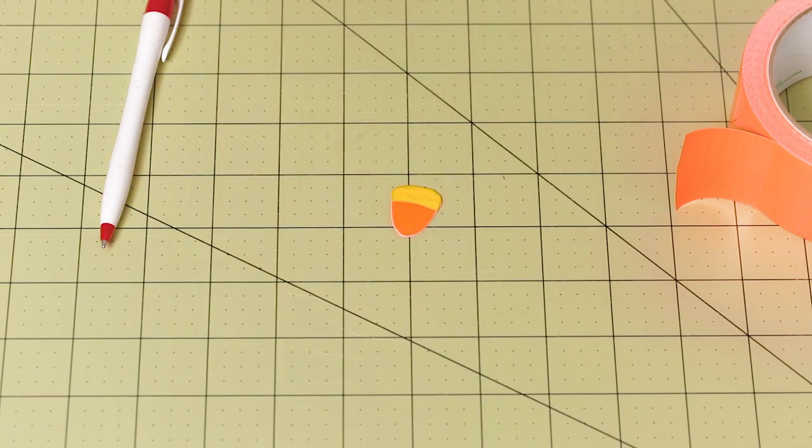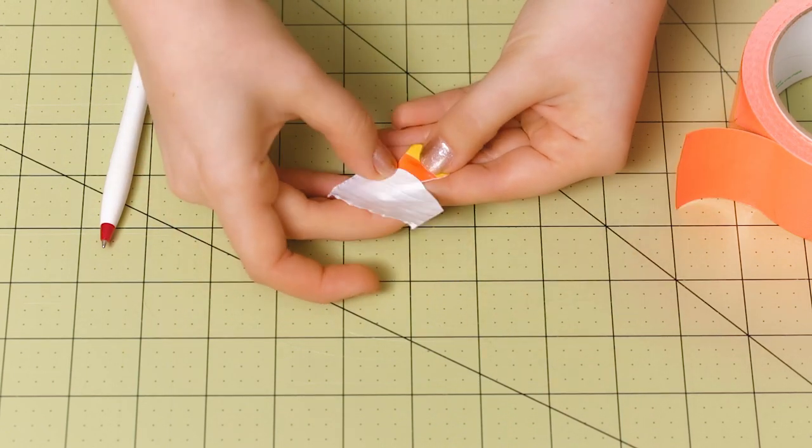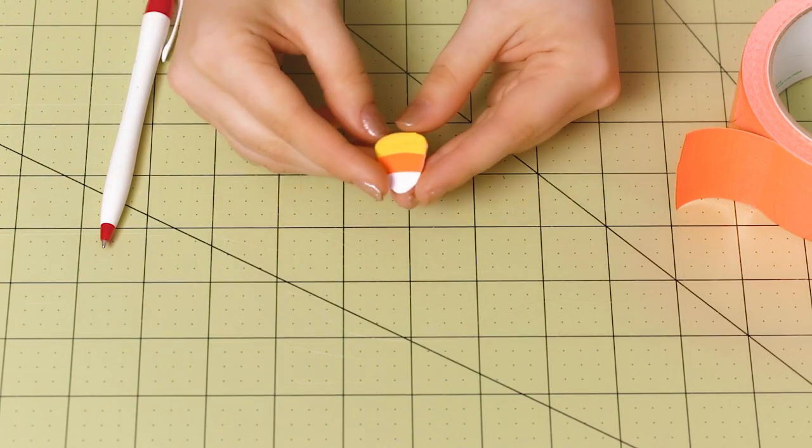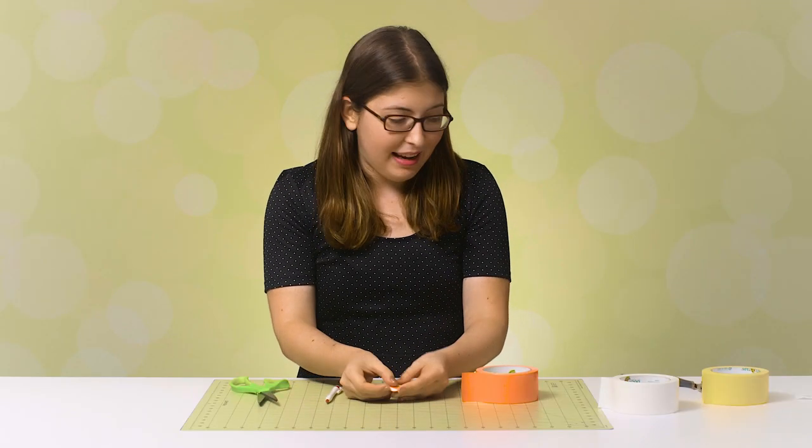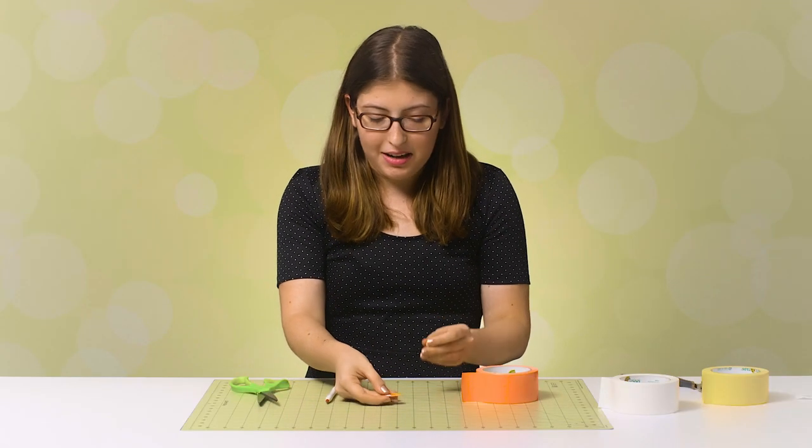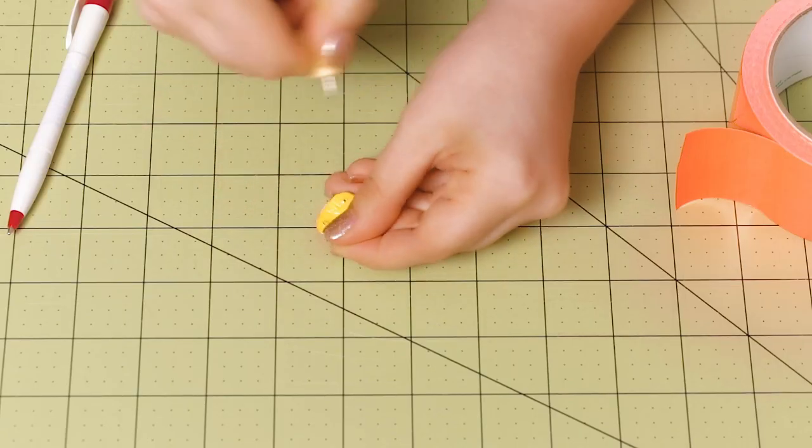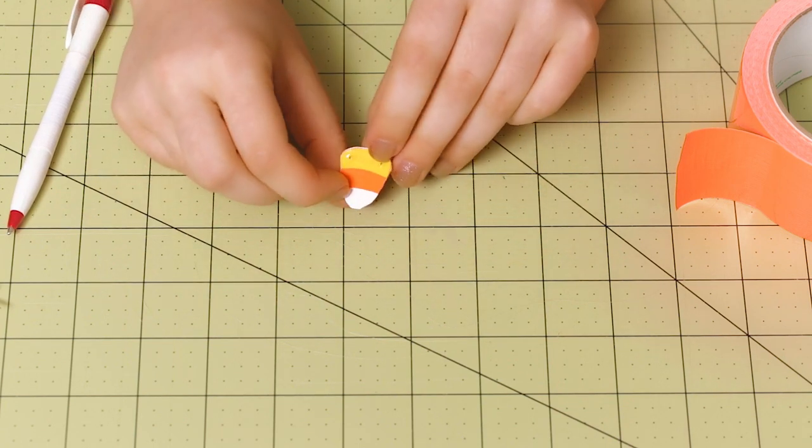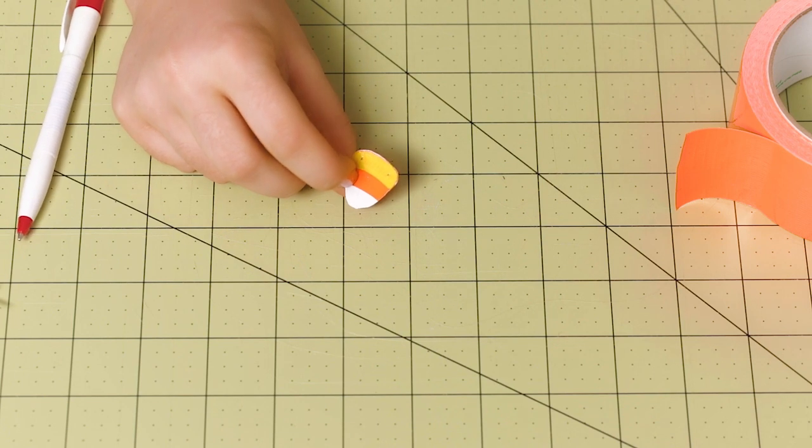So we can see how that's starting to look like a piece of candy corn. But to finish it off, I think we need a little bit of white tape for the bottom. All right. And now we have this cute little candy corn made of duct tape. In order to turn it into a necklace, we're going to use a thumbtack to put a hole in each of the top two corners. And if you need help, be sure to ask an adult. There we go. Now we can see our little candy corn with two little holes right at the top.